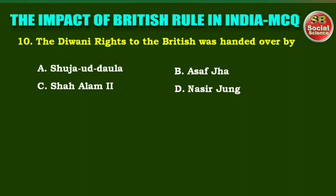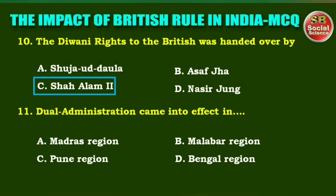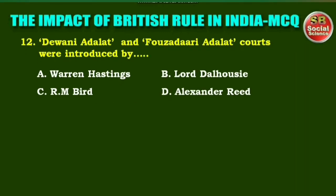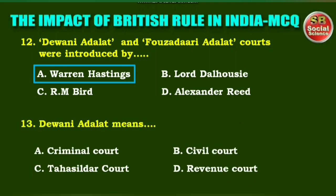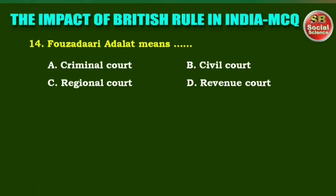Next one: Dual administration came into effect in — options are: Madras region, Malabar region, Pune region, Bengal region. The right answer is option D: Bengal region. Next question: Diwani Adalat and Fauzudari Adalat courts were introduced by — options are: Warren Hastings, Lord Dalhousie, R.M. Bird, Alexander Reed. The right answer is option A: Warren Hastings. Next question: Diwani Adalat means — criminal court, civil court, Tahasirdar court, revenue court. The right answer is option B: civil court.